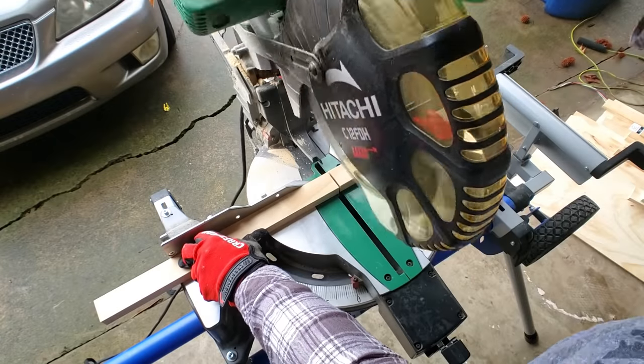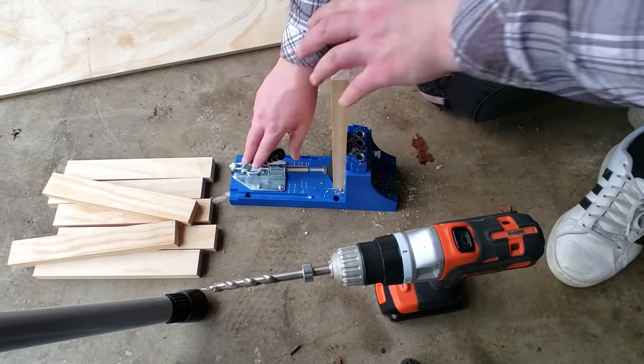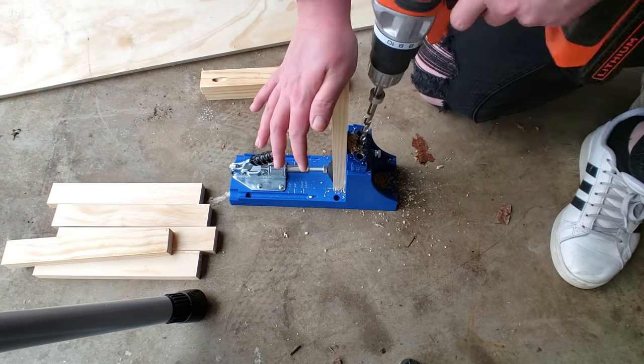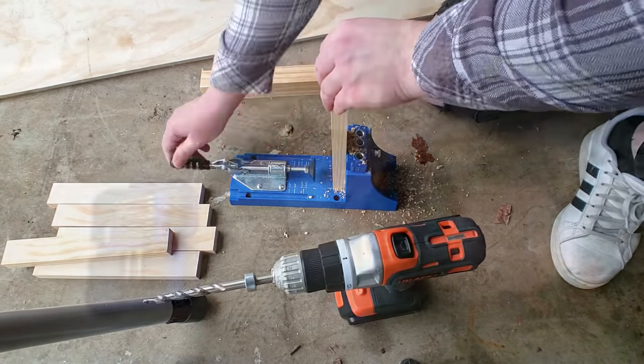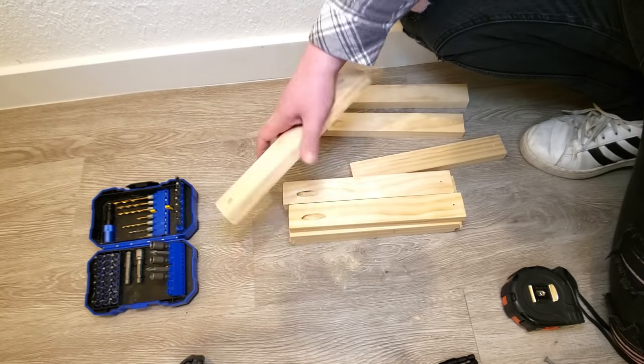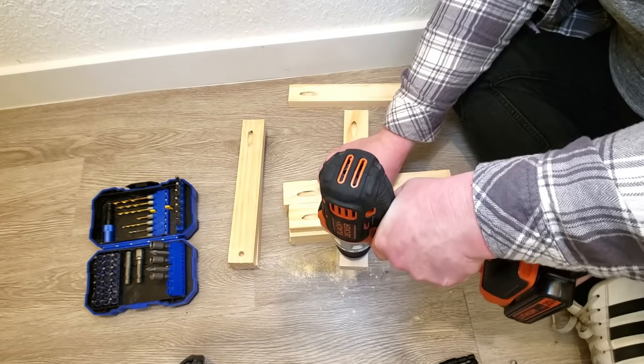I cut the last cleats down to size and added a pocket hole to one end of each cleat, just like we did in the last ones. I don't have a stud to attach these to, so on the other end I drilled a pilot hole. This will be for an anchor screw.